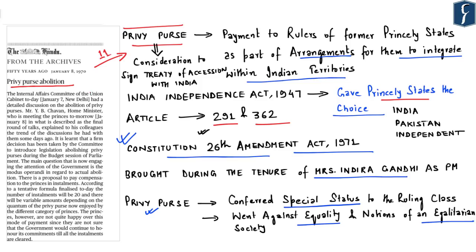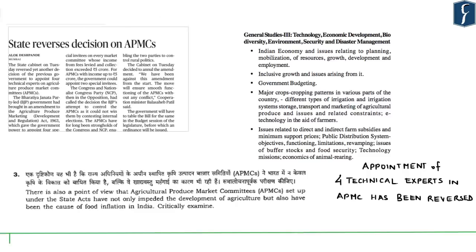The next news appears on page 7: 'State Reverses Decision on APMCs.' This news concerns Maharashtra, where the state cabinet has reversed the appointment of four technical experts in Agricultural Produce Marketing Committees. Though state-specific, let us understand about Agricultural Produce Marketing Committees and the various problems faced by these marketing committees that have impacted Indian agriculture as a whole.